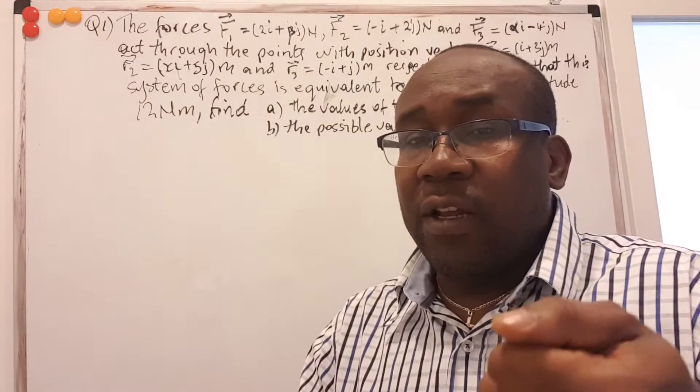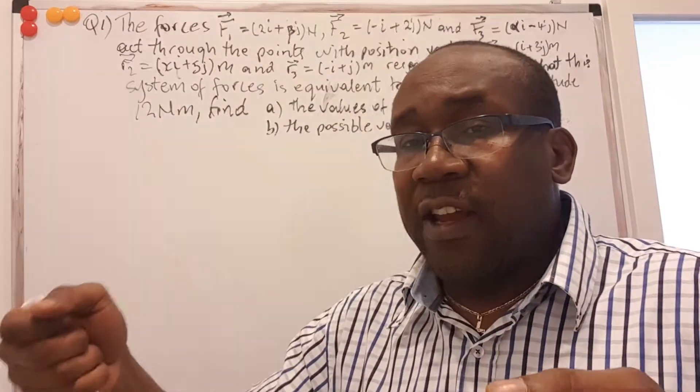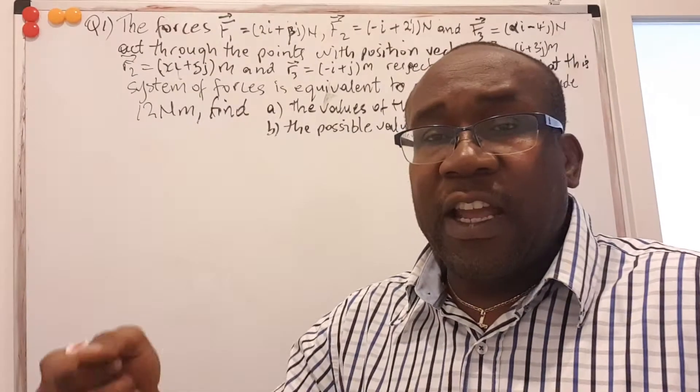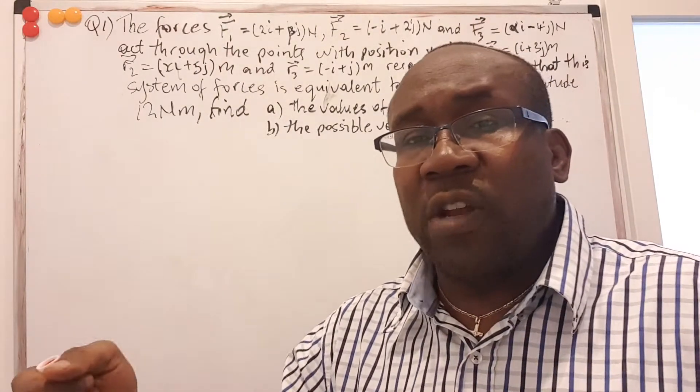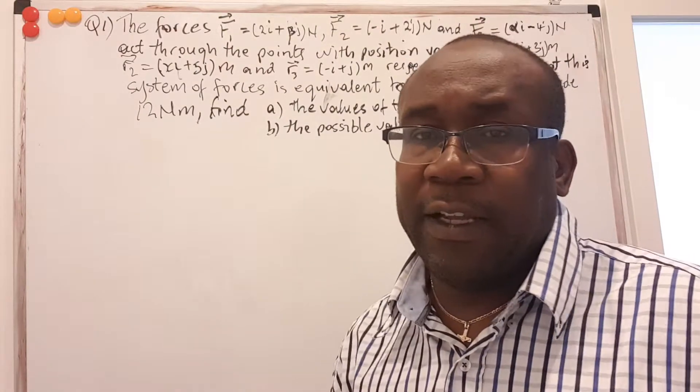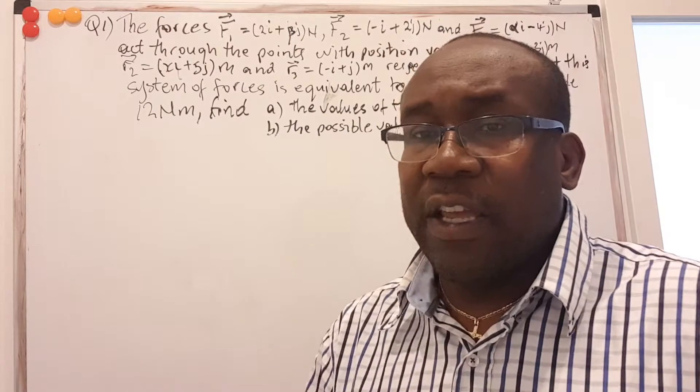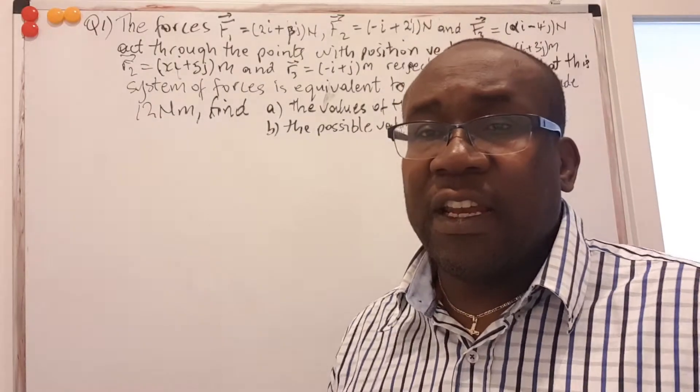So if you have, for example, a steering wheel and you have a force acting on the left hand and another on your right hand, then they have to be in opposite direction or equal magnitude to cause the steering wheel to rotate. It doesn't move up its axis. It stays on its axis, but it rotates. That's what we call a couple.